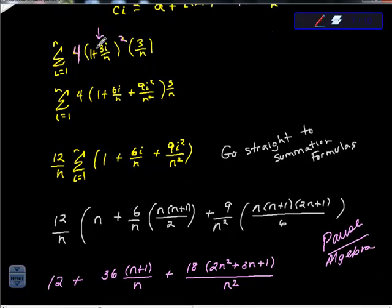What I did here was this 4 right here is this one right here, but this is 1 plus 3i over n squared, so if you squared that out, if you expanded that, you'd get this inside value right here, so you can take a second to fill that value in.